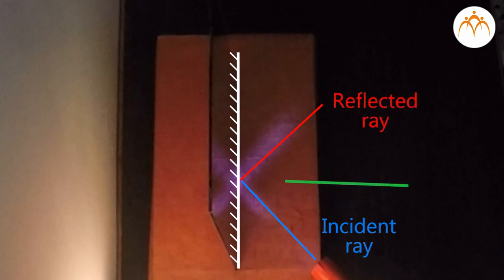Draw perpendicular at a point where incident ray and the reflected ray meet. This is called a normal line. This normal line divides the angle between the incident ray and the reflected ray into two equal angles.